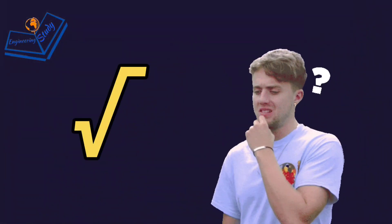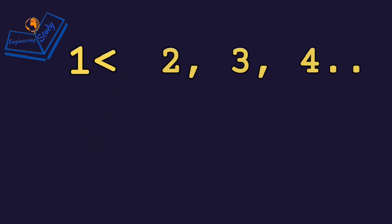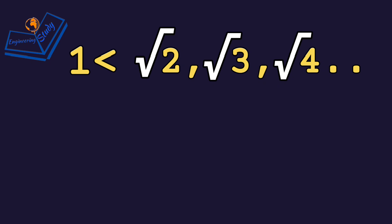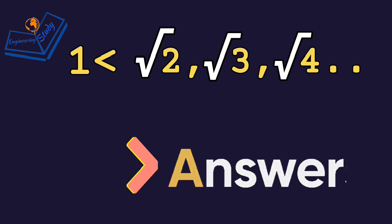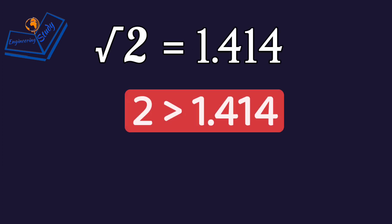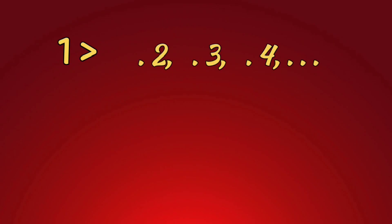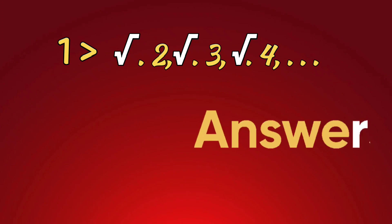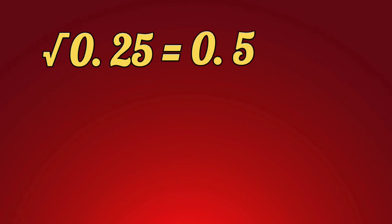Now let's understand how to take the square root. When we take the square root of any value greater than 1, the answer comes less than that value. For example, the square root of 2 is 1.414, which is smaller than 2. But when we take the square root of any value less than 1, the answer comes more than that value. For example, the square root of 0.25 comes to 0.5.